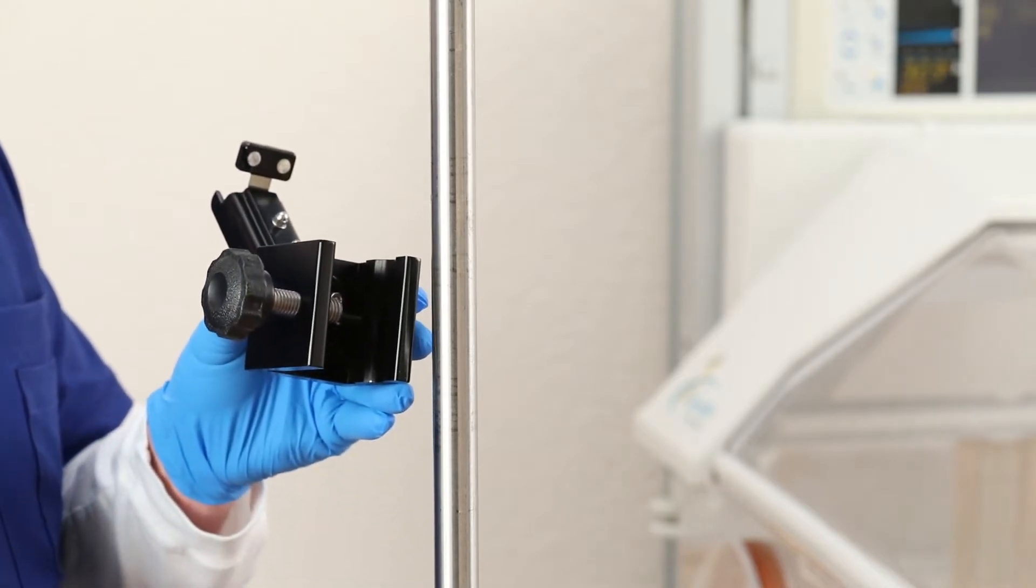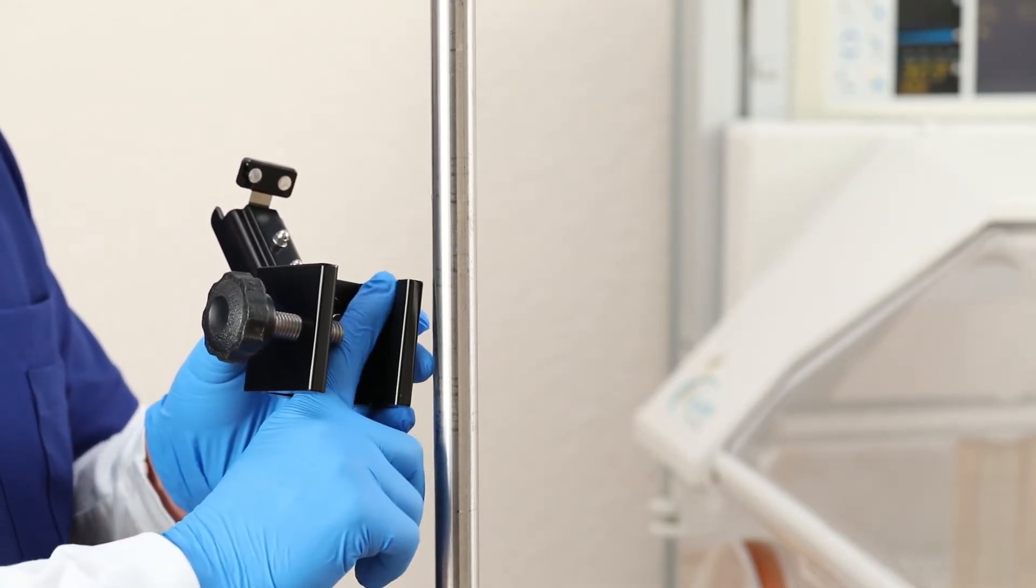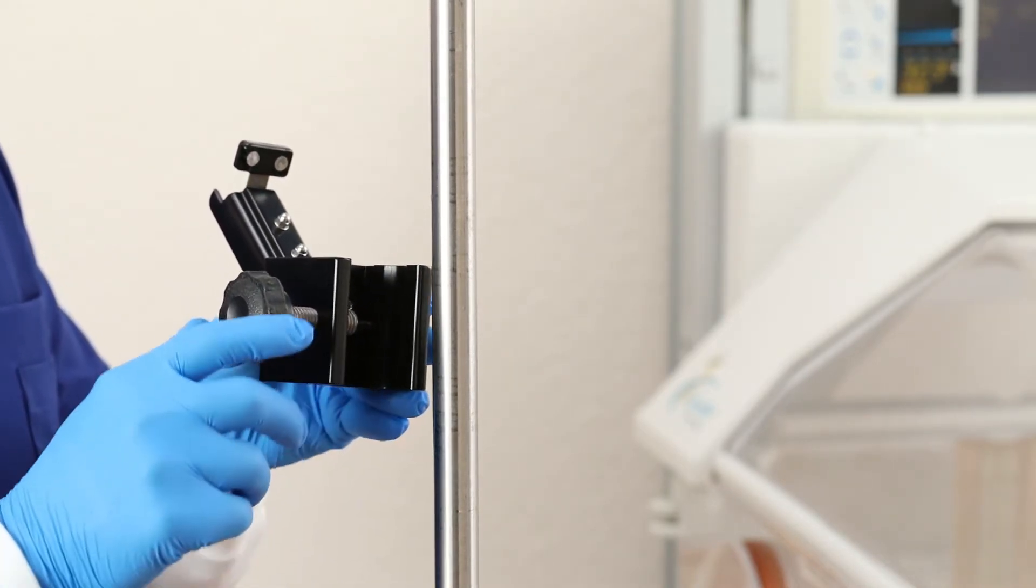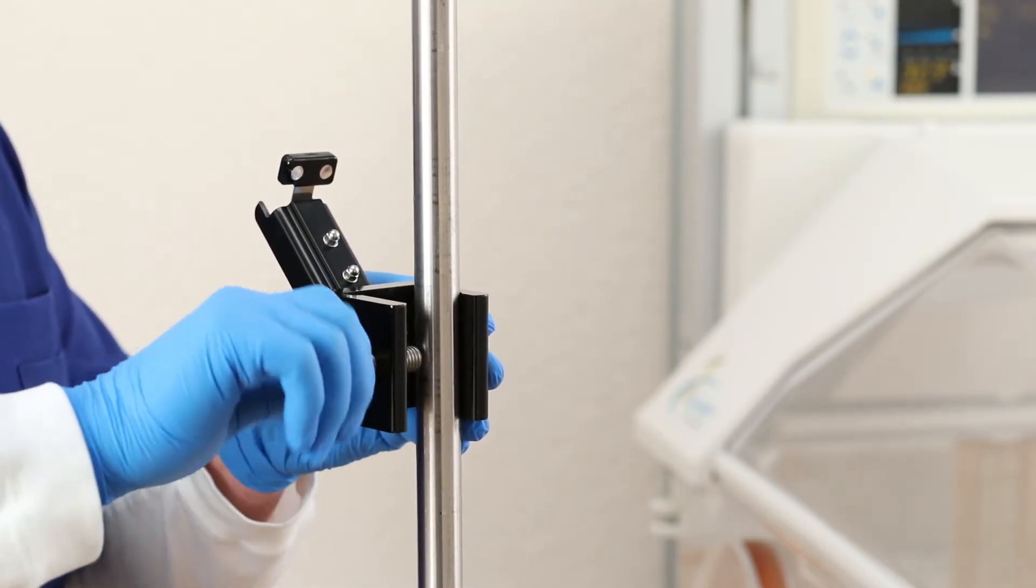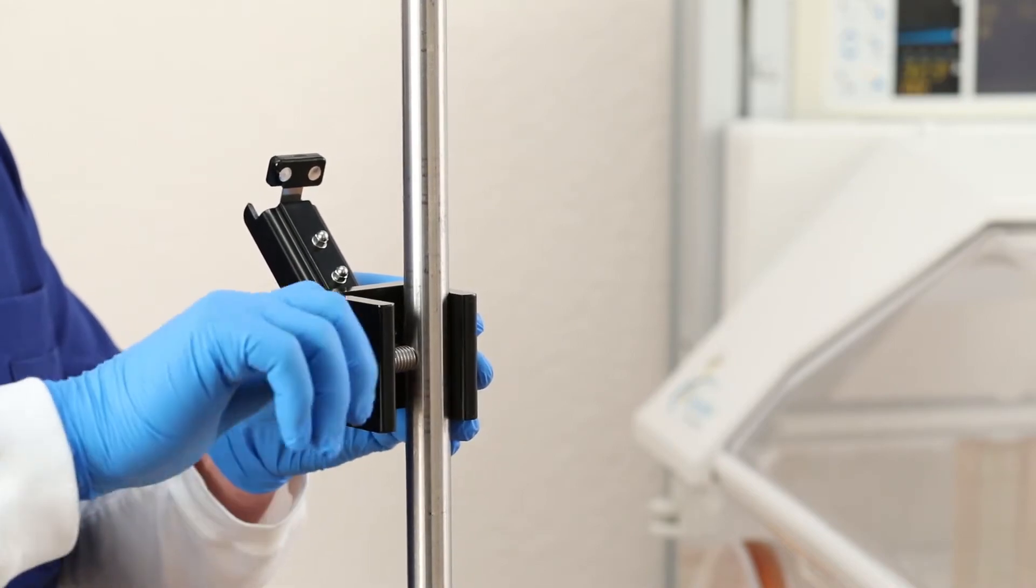The first step is to mount the clamp. Ensure the clamp is positioned so the curved channel is in alignment with the pole. The clamp can be easily mounted to a pole by tightening the screw knob clockwise to capture the clamp in the selected position for use.